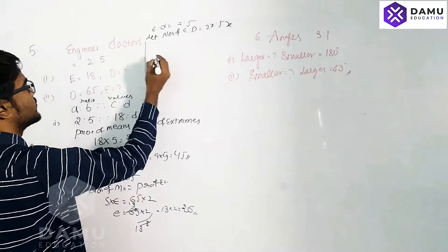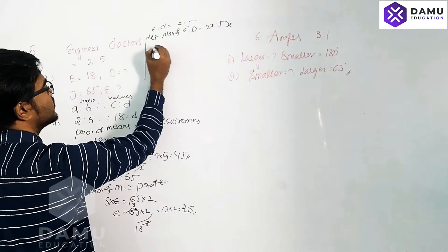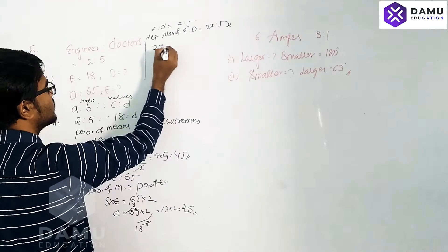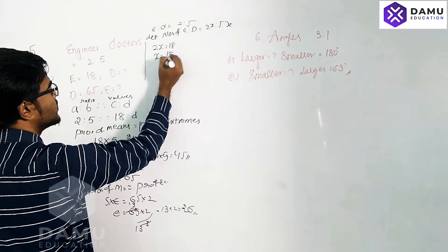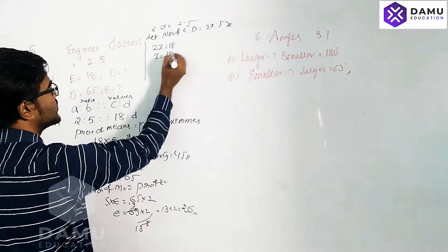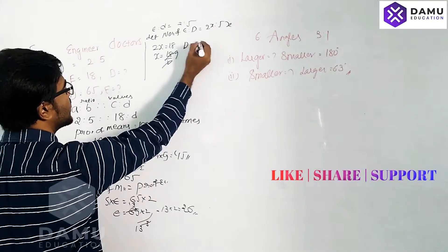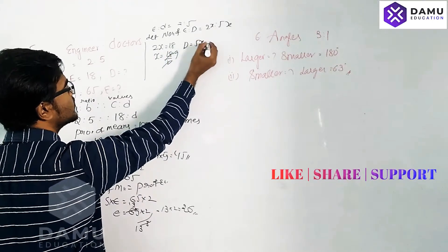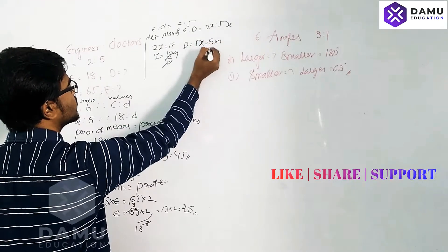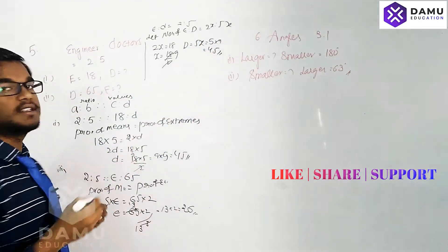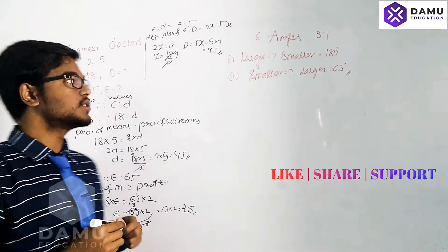For the first case, the number of engineers is given as 18, so 2x equals 18, meaning x equals 9. The number of doctors is 5x, which is 5 into 9, equaling 45.